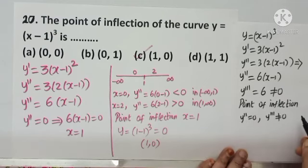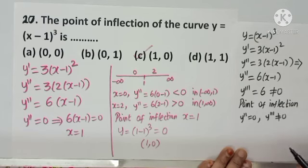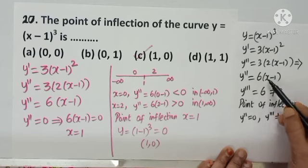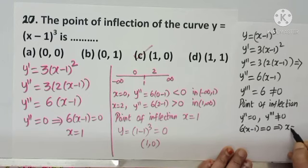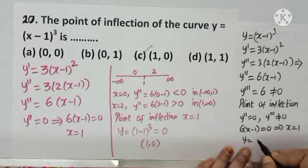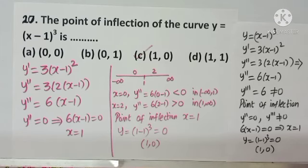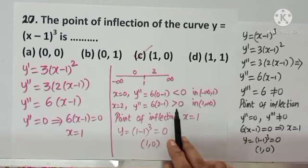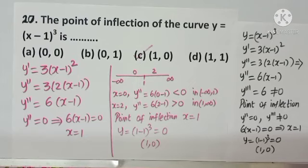Shortcut for point of inflection: find the second and third derivatives. The condition is y″ = 0 and y‴ ≠ 0. Here y″ = 0 gives x = 1, and y‴ = 6 ≠ 0, confirming (1, 0) is the point of inflection. Instead of checking concavity changes, you can use this technique directly.